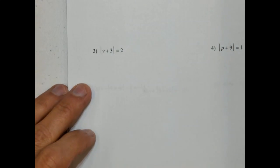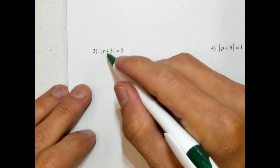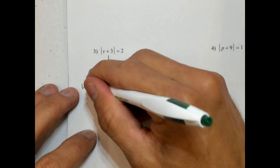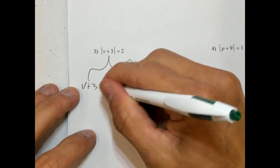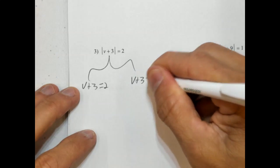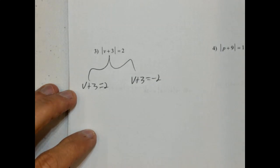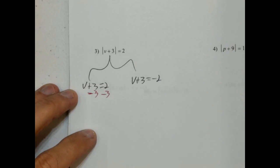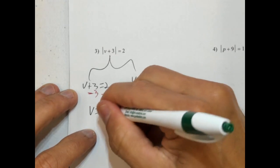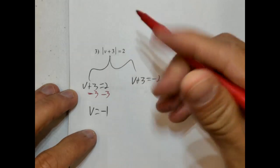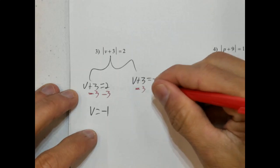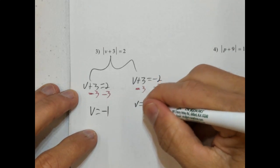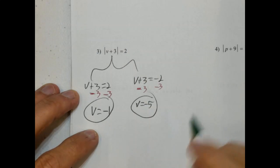So our answer is both negative 8 and positive 8. Next, we have the absolute value of v plus 3 equals 2. We rewrite it as v plus 3 equals 2, and v plus 3 equals negative 2. Subtracting 3 from both sides using the inverse operation, v equals negative 1. On the other side, negative 2 minus 3 is negative 5. So our two answers are negative 1 and negative 5.